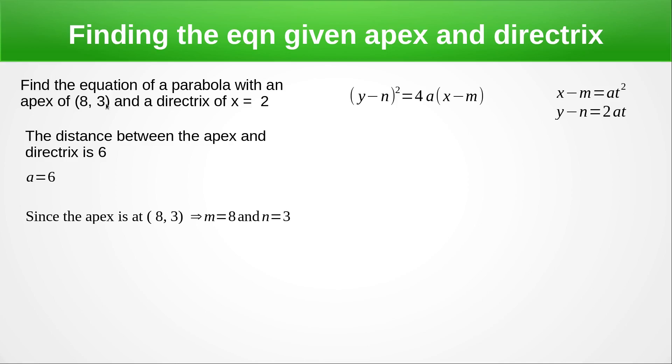But we know the apex is at (8, 3) and that's going to give us our m and n values. So here we've got them there, just take them directly from the apex, so this will become an 8 and this will become a 3.